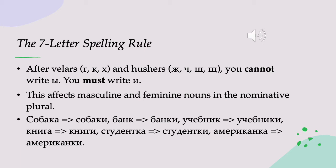The seven-letter spelling rule says that after velars and hushers, you cannot write Ы — you must write И. Velars are sounds you make in the back of your mouth with your velum. Those sounds in Russian are Г, К, Х, and Russian has three velars: Г, К, Х, and they are included in the seven-letter spelling rule.